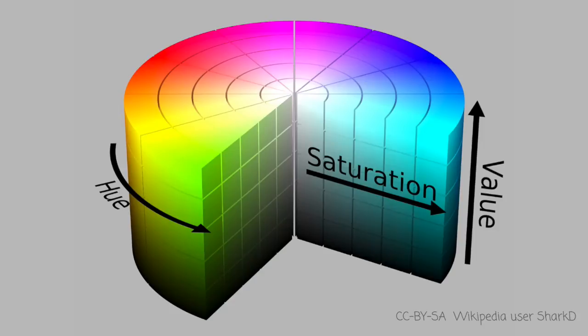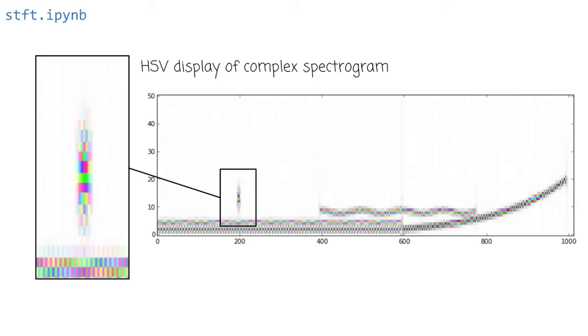So we should get nice bright colors where we've got high magnitude and the color will reflect the phase angle. So, so here's that same spectrogram again, and we can see the pixels again, too, which I kind of like. And now we can see the phase angle by color.